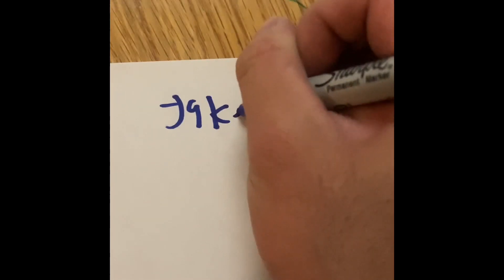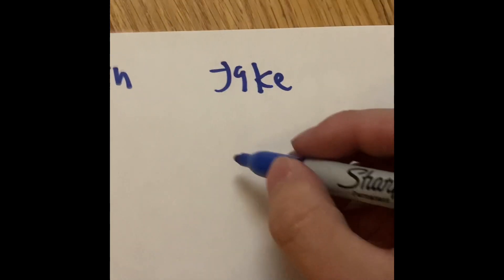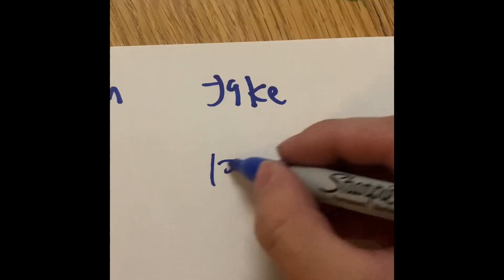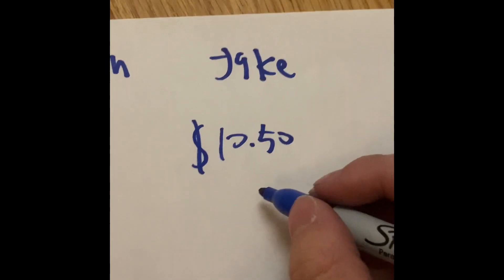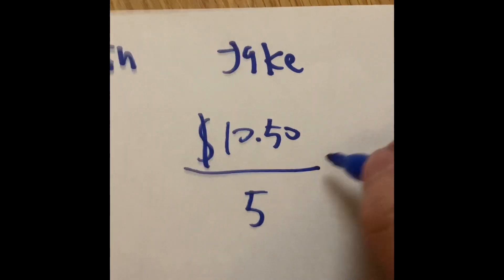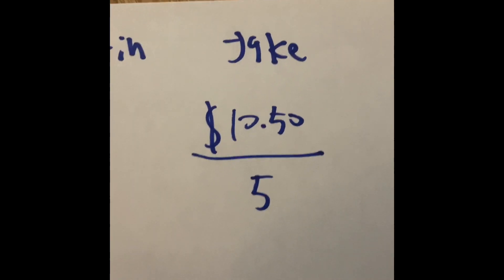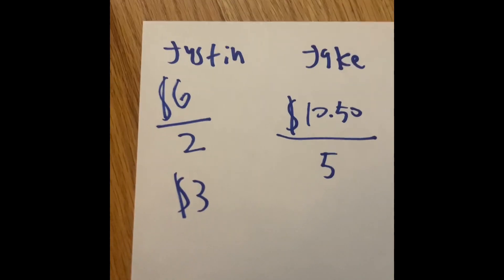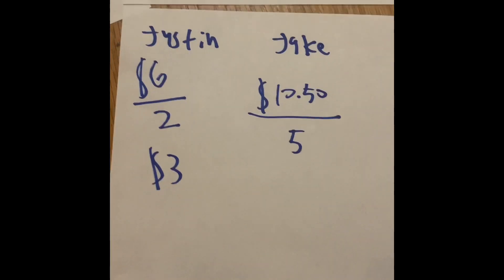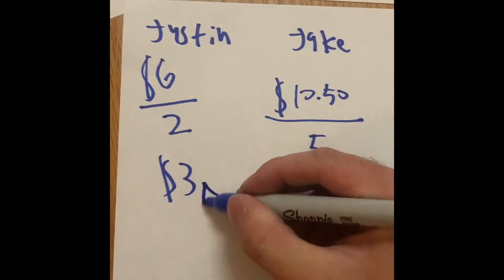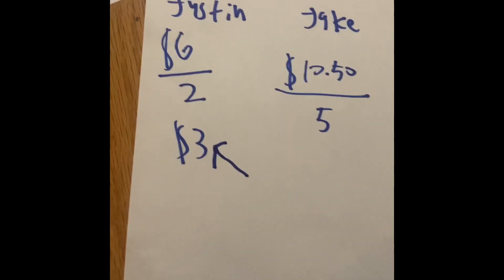For Jake, he's the second person to come to the ice cream shop. His total was $10.50, and he bought five toppings. If you do $10.50 divided by five, you're going to get an answer of the toppings and the ice cream. We know that the cost of an ice cream without any toppings is going to be three.